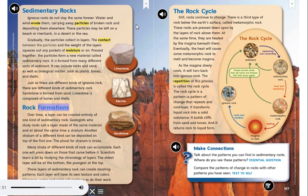Rock formations. Over time, a layer can be created entirely of one kind of sedimentary rock. Geologists who study rocks call a layer made of the same material, and at about the same time, a stratum. Another stratum of a different kind can be deposited on top of the first one. The plural for stratum is strata.